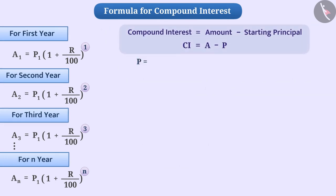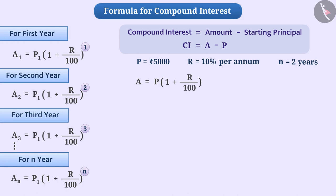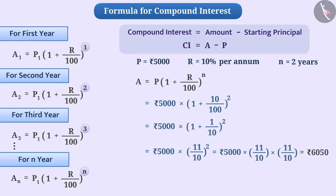Now, consider P is equal to Rs 5000, R is 10% per annum, and N is equal to 2 years. To find compound interest, we use the formula: A equals P into bracket 1 plus R by 100 raised to the power N, which gives Rs 5000 into bracket 1 plus 10 by 100 raised to the power 2, equal to Rs 6050.